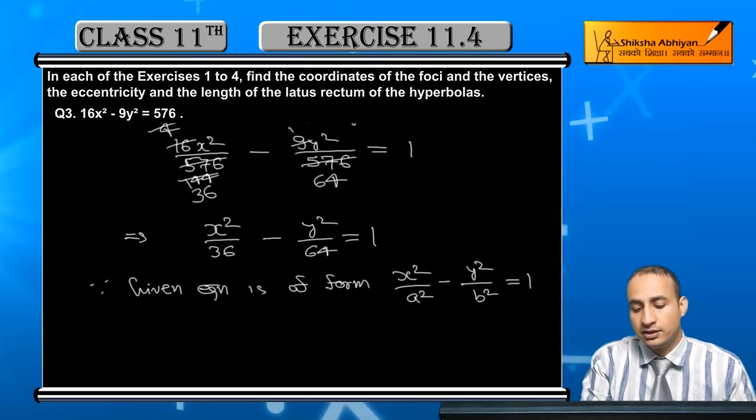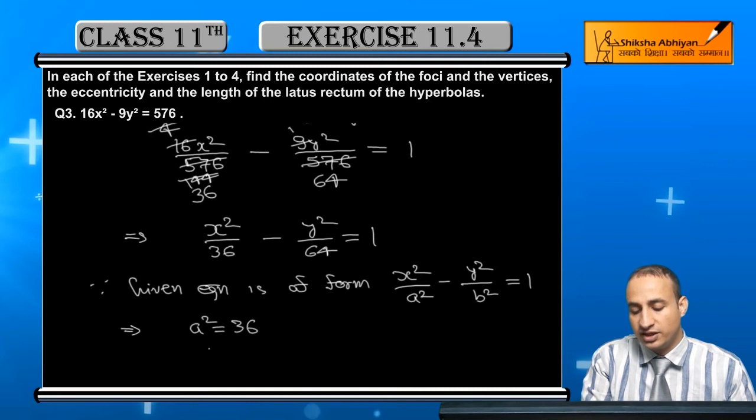This implies that a² is equal to 36, so a is equal to positive value 6.